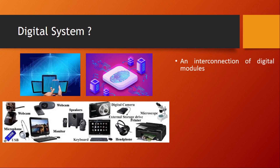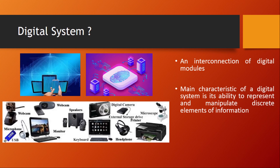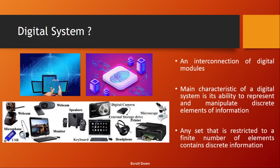A digital system is essentially an interconnection of digital modules. It consumes a lot of information, transforms it into a digital nature, and passes it to a processing system which gives us more meaningful data. One of the main characteristics of a digital system is the ability to represent and manipulate discrete elements of information. Any set restricted to a finite number of elements can be called discrete information.